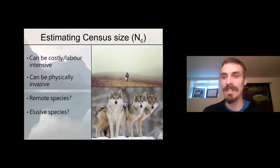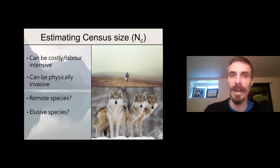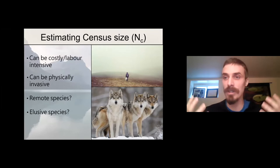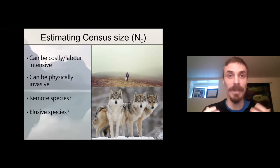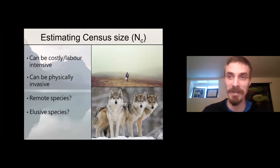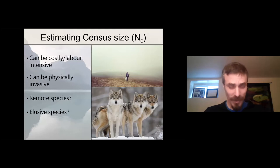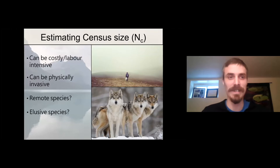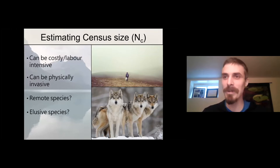Estimating census size is a really critical parameter in ecology. It's a really important fundamental characteristic of populations that's important to just understand how ecosystems work. But estimating census size is notoriously difficult. Despite pretty remarkable progress in the last century on estimating census size, it can still be really costly and labor intensive to do.